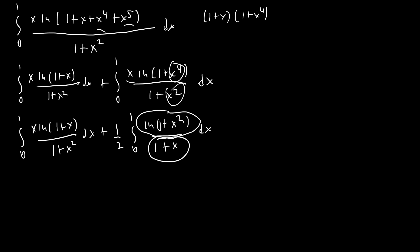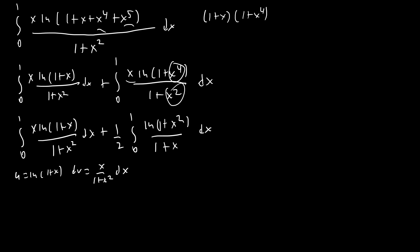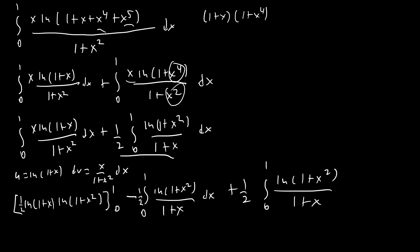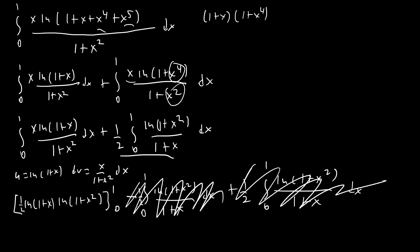If we do integration by parts on the first integral, letting u = ln(1+x) and dv = x/(1+x²) dx, we get [ln(1+x)·(1/2)ln(1+x²)] evaluated from zero to one, minus the integral from zero to one of (1/2)·ln(1+x²)/(1+x) dx. Adding back the second integral, these integrals perfectly cancel with one another, and all we're left with is the boundary evaluation, which gives ln²2 / 2.